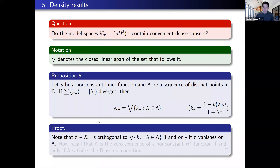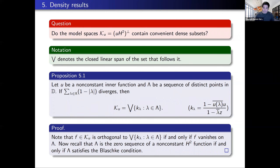The proof is a straightforward one. Suppose F is in the model space and it's orthogonal to the closed linear span of all those kernels. You're orthogonal to k_lambda if and only if you vanish at the point lambda. So you're orthogonal to this closed linear span if and only if you vanish on the entire sequence capital lambda. Since capital lambda doesn't satisfy the Blaschke condition, if you vanish on capital lambda, you've got to be the zero function. So the only function in the model space orthogonal to this closed linear span is the zero function, meaning that closed linear span is the entire model space.